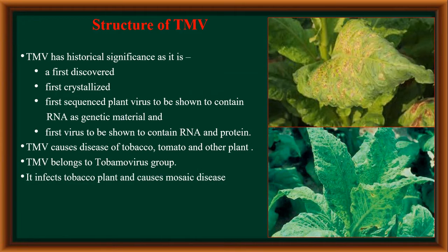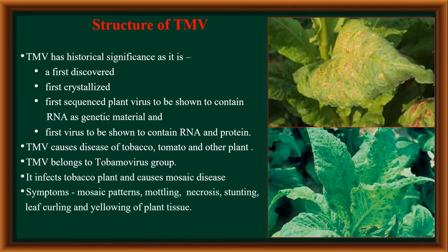The symptoms of this disease are the appearance of a mosaic pattern on leaves, mottling, necrosis, stunting, leaf curling, and yellowing of plant tissues. Therefore, the disease is named as mosaic disease. You can see here in this picture the mosaic pattern of the disease on leaves.